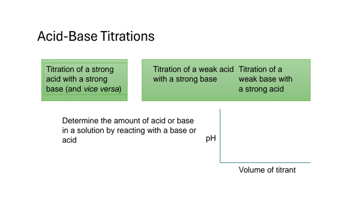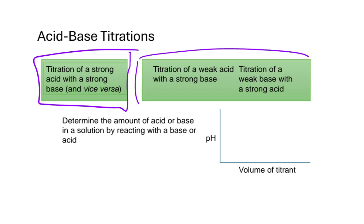It's time to talk about titrations. I'm going to categorize titrations in two ways: either we have a strong acid titrated with a strong base, or a strong base titrated with a strong acid — that's one category. Or we have a weak acid titrated with a strong base, or a weak base titrated with a strong acid. That's the second category. I'm splitting these up because the calculations are different — more involved when we have a weak acid or weak base.